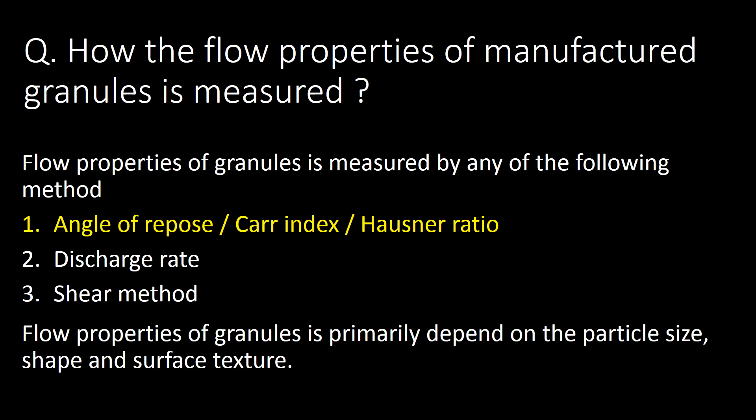How are the flow properties of manufactured granules measured? Flow properties of granules are measured by any one of the following methods: angle of repose, Carr index or Hausner ratio, discharge rate, or shear method. Flow properties of granules primarily depend on particle size, shape, and surface texture.